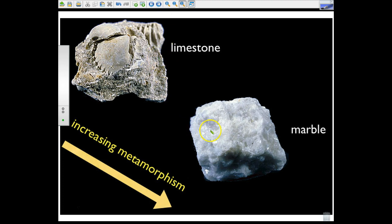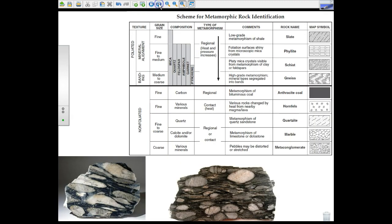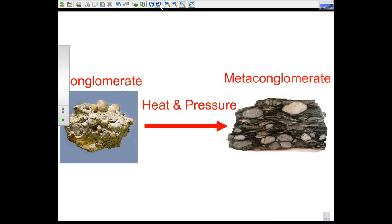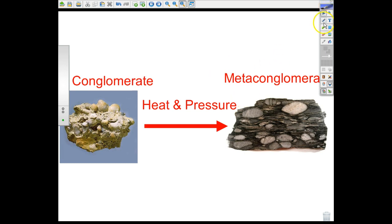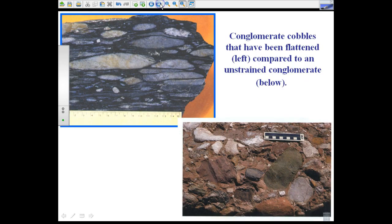If you apply heat and pressure to limestone you can get marble. From marble we move to metaconglomerate. Generally conglomerate becomes metaconglomerate through regional or contact metamorphism with various minerals involved. You can see distortion from heat and pressure — the clasts become elongated. The image shows conglomerate on the bottom and metaconglomerate above it, illustrating how the particles are stretched and deformed by the metamorphic process.